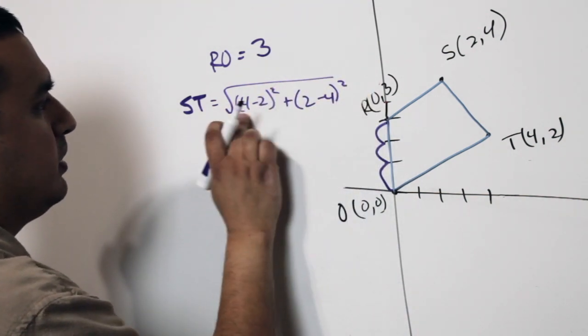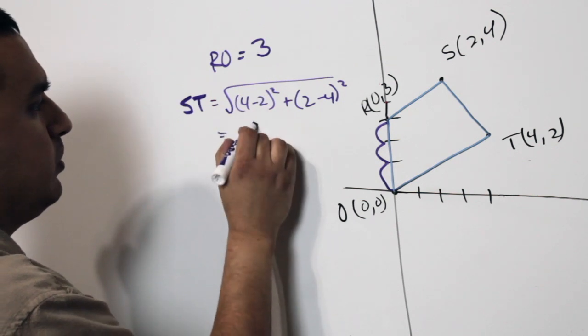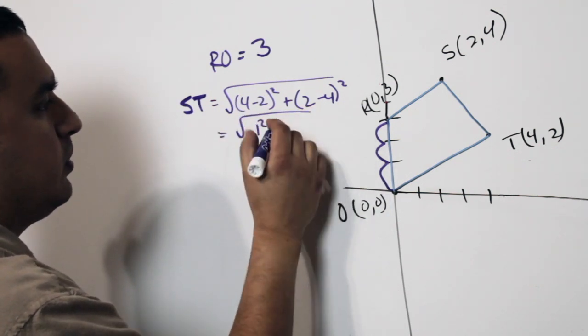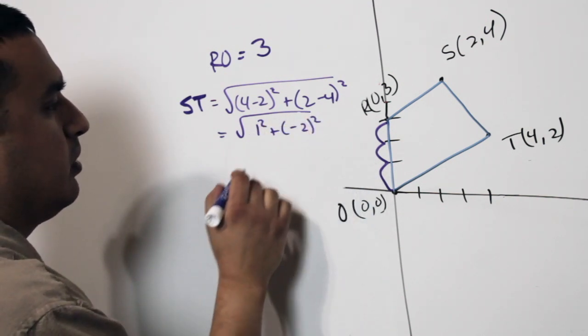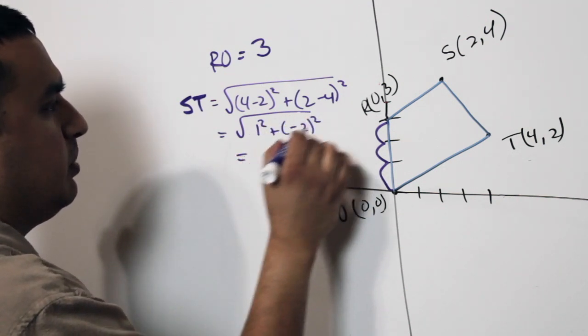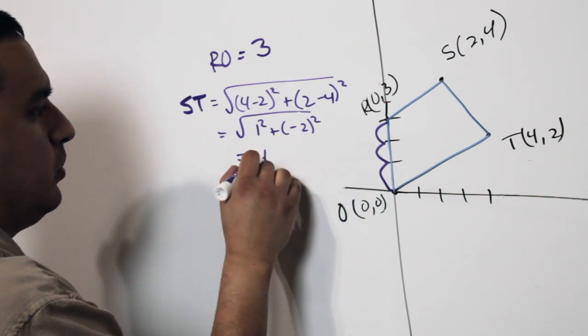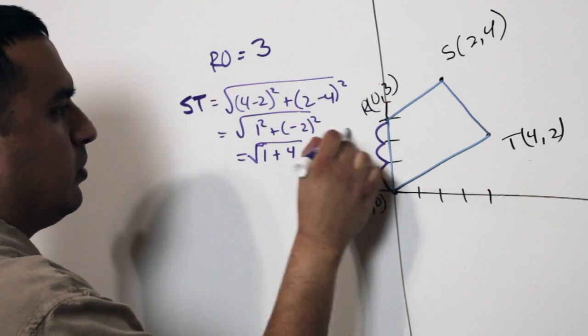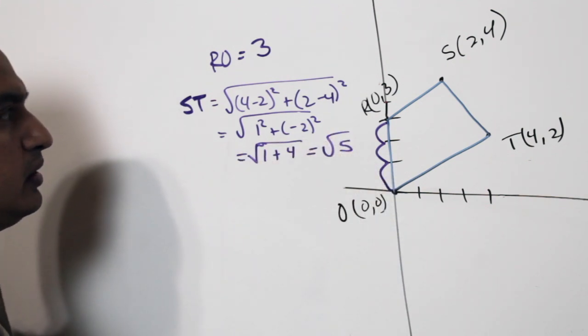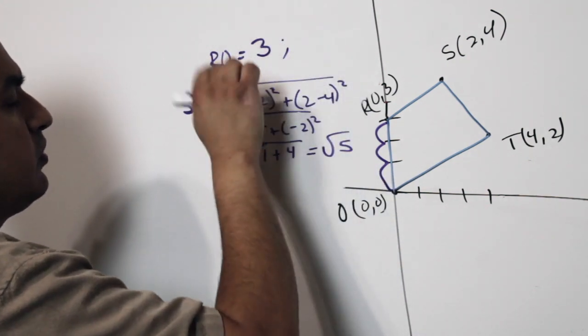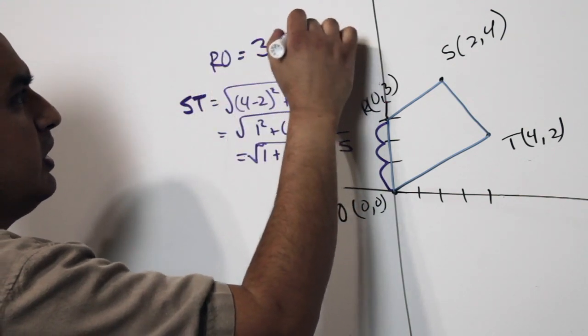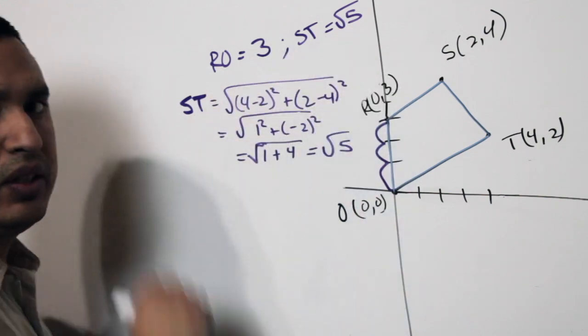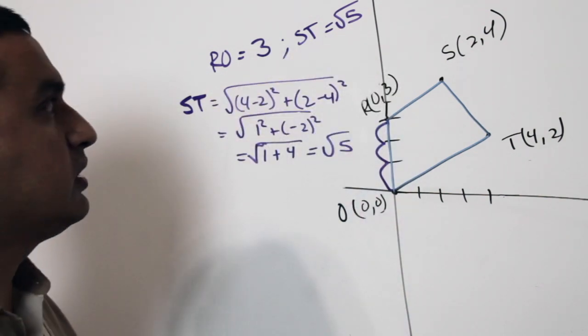Okay, if I simplify this out, this is going to be 4 minus 2 is 1 squared. 2 minus 4 is going to be a negative 2 squared. Okay, and that is going to be equal to 1 plus 4, which is the square root of 5. Okay, so I know that the distance from r to o is 3, and the distance from s to t is equal to the square root of 5. Since these two are not equal, I know it's not an isosceles trapezoid.